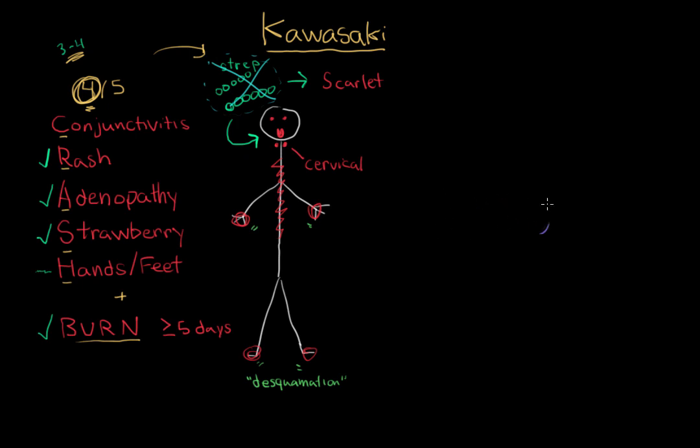Now there's also a more tricky form of Kawasaki disease that is known as atypical or incomplete Kawasaki disease. Atypical or incomplete Kawasaki disease is when you have three or less of these classical symptoms of Kawasaki disease.